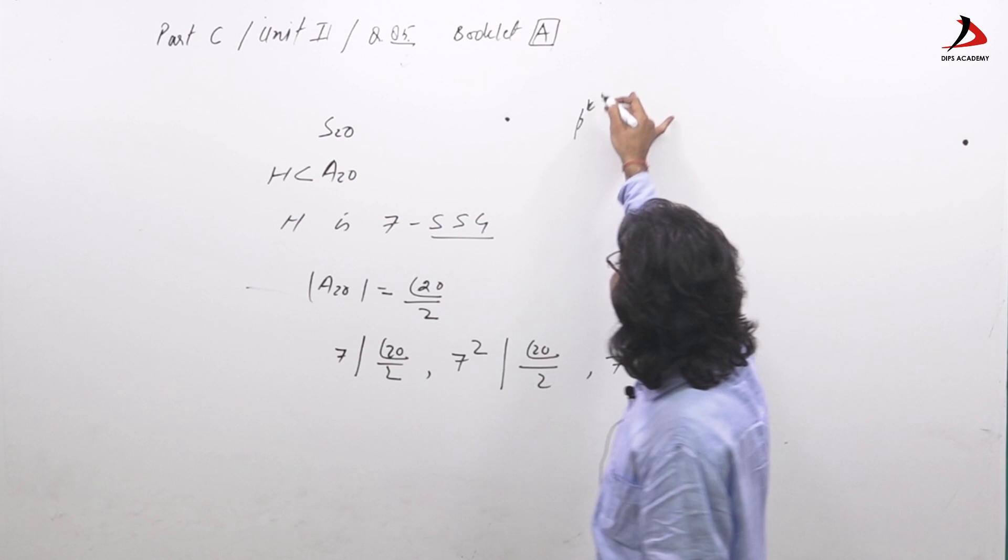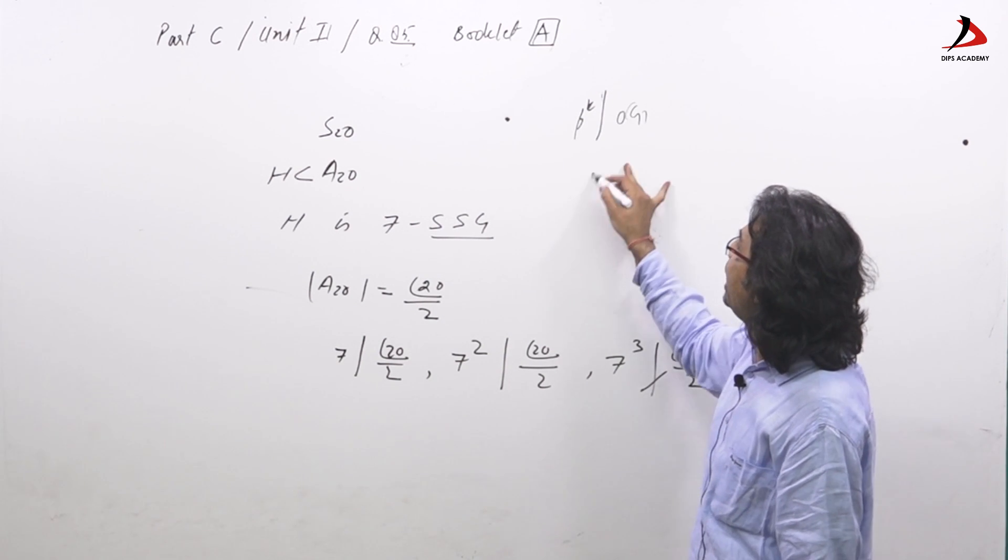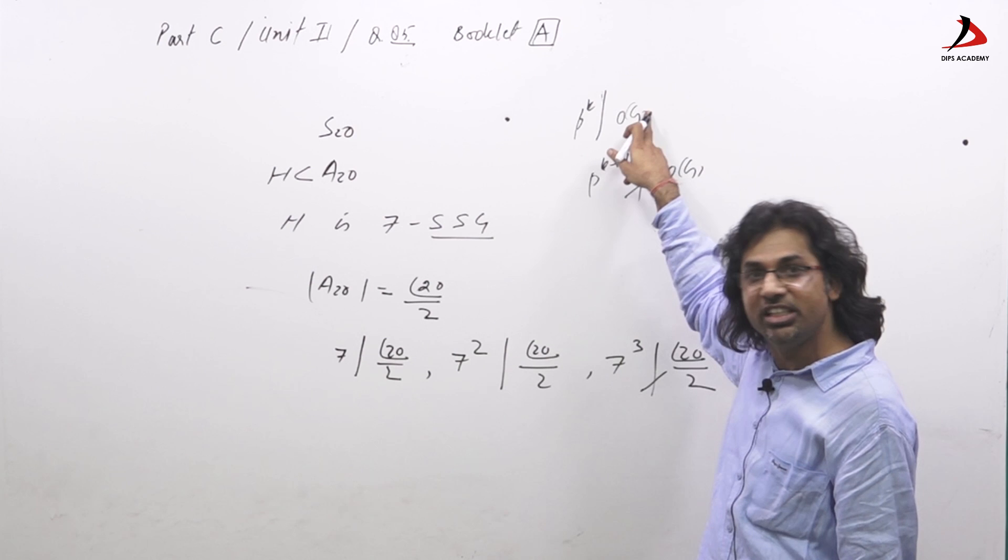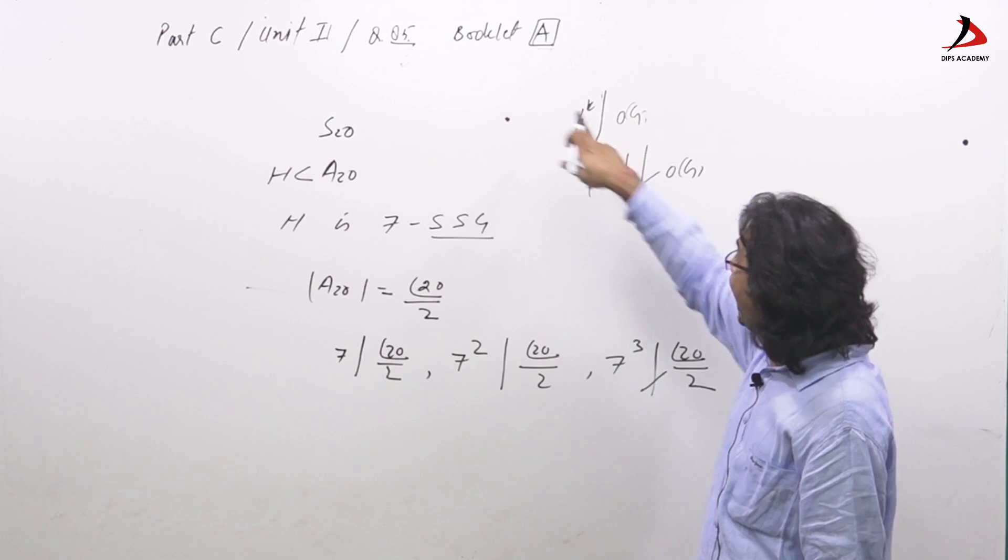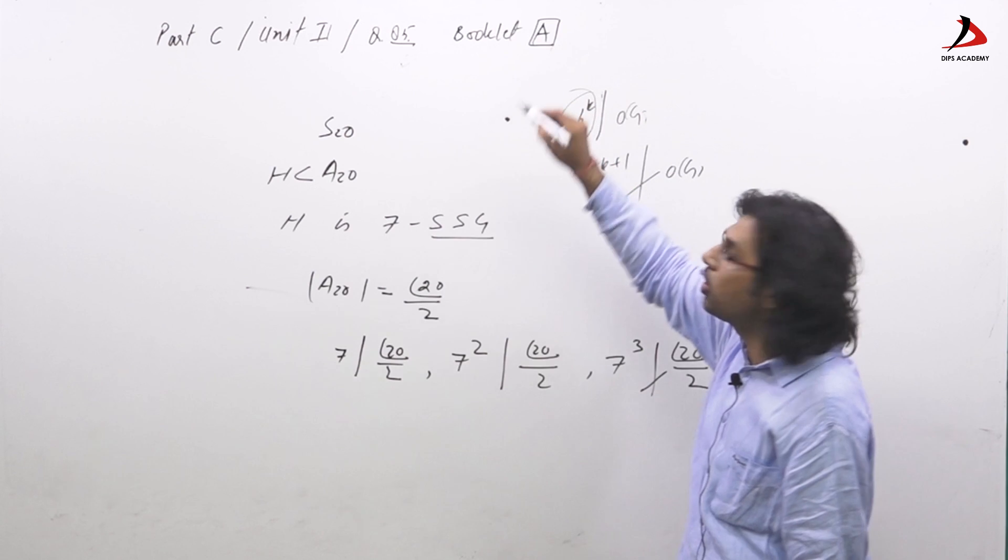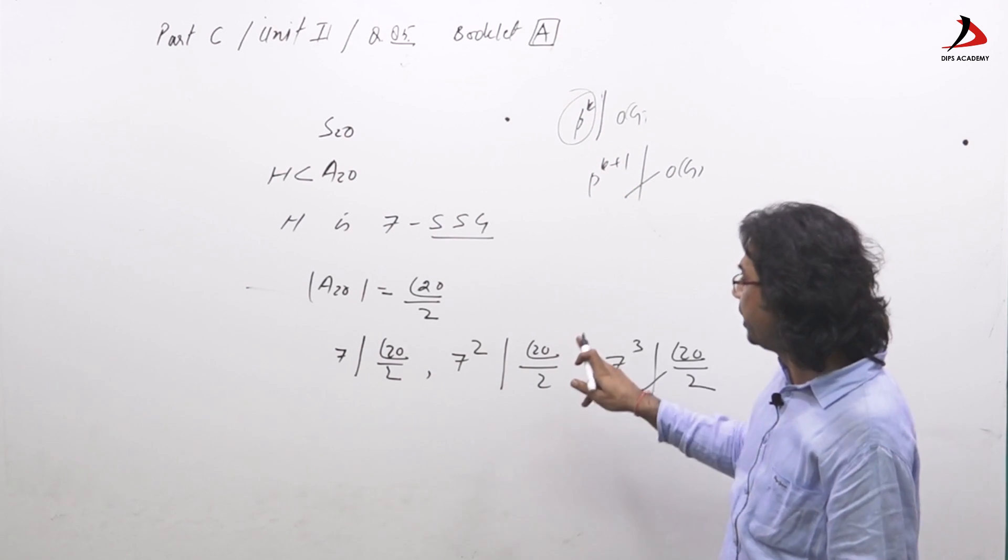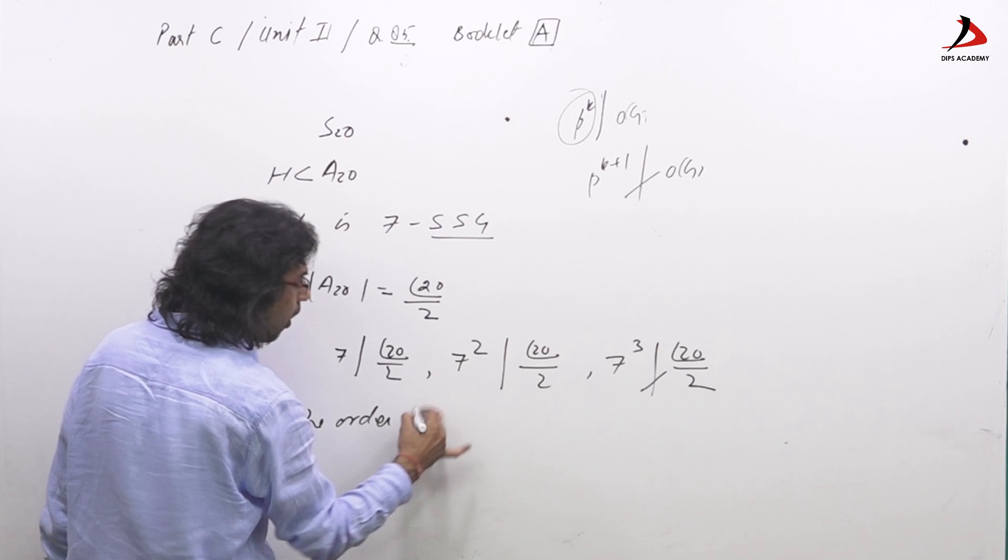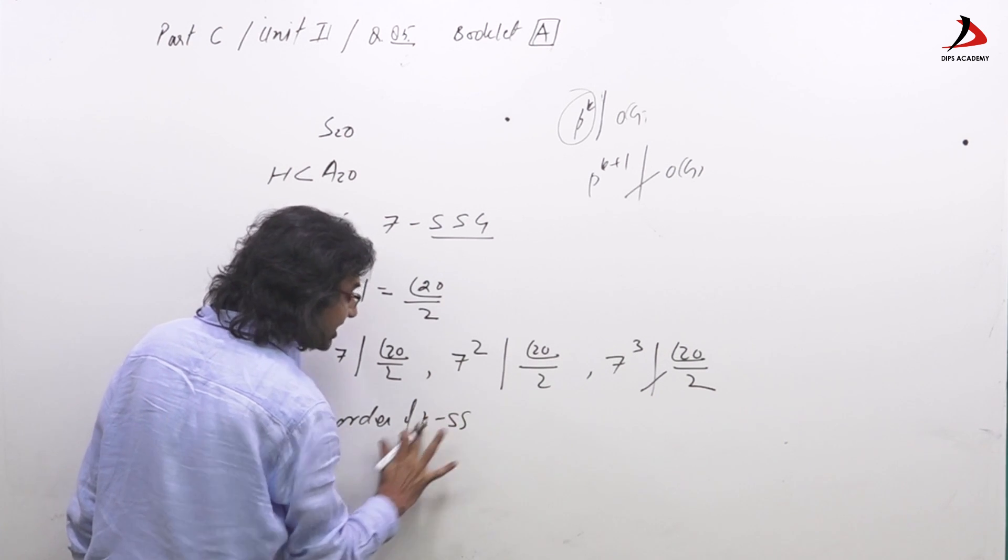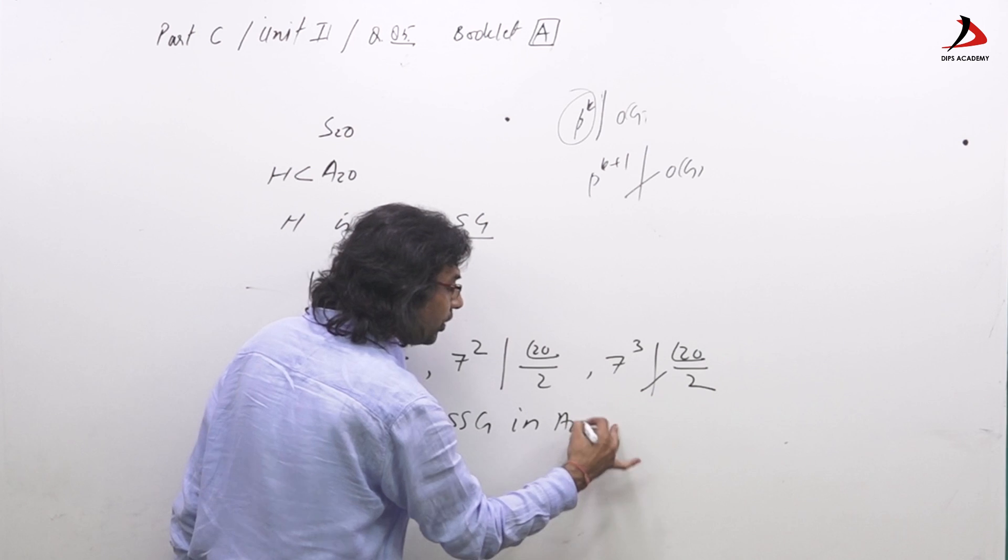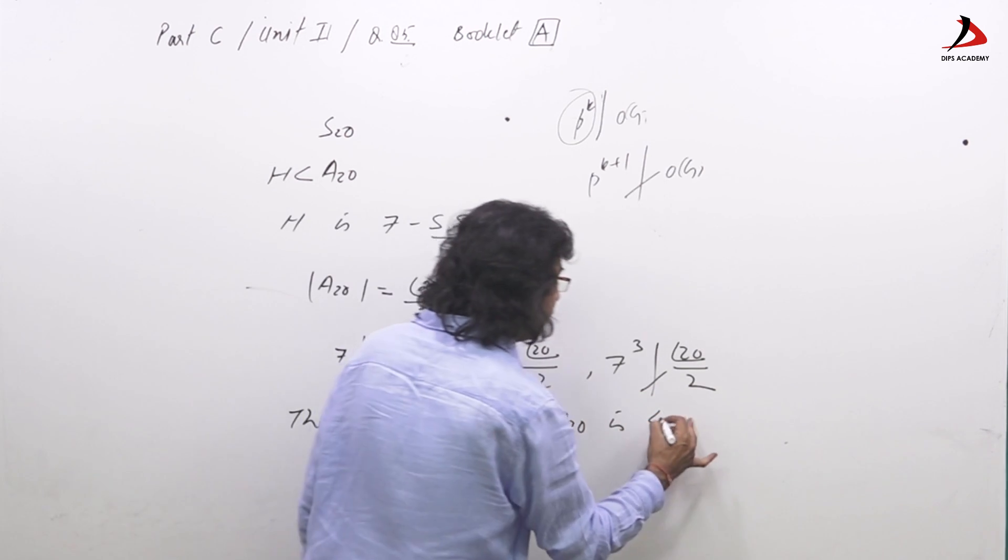This is the fundamental concept of Sylow subgroups that if P to the power K divides order of G and P to the power K+1 does not divide order of G, then G has a subgroup for every divisor of such numbers and the subgroup of this order is called P-SSG. So here the order of P-SSG, that is 7-SSG in A_20, is 49.